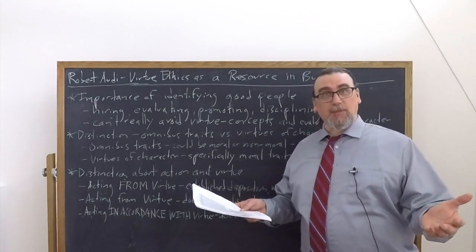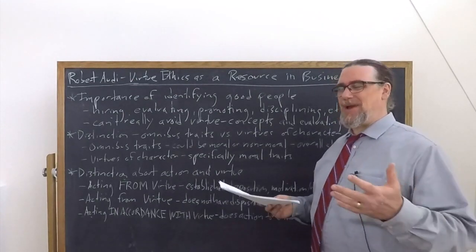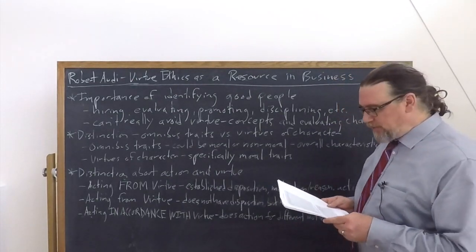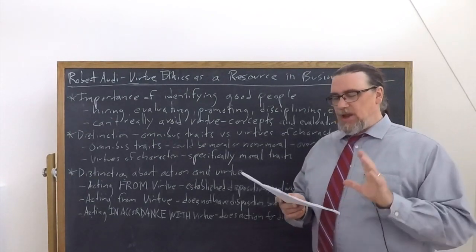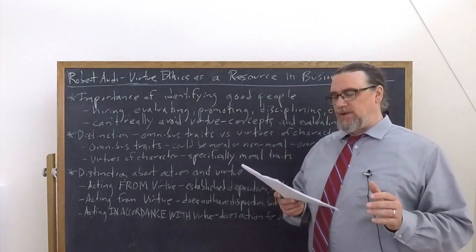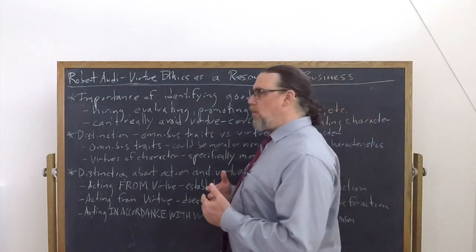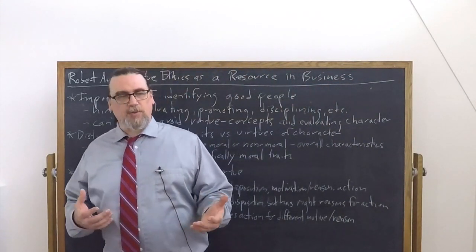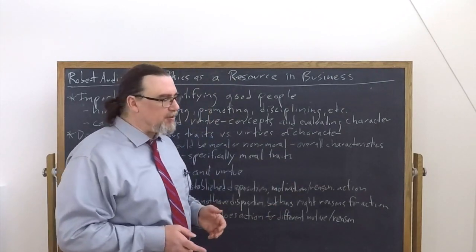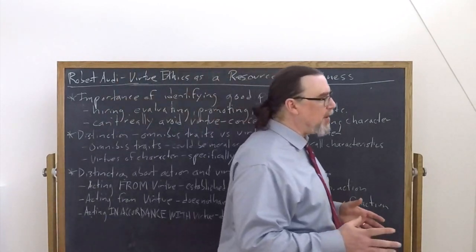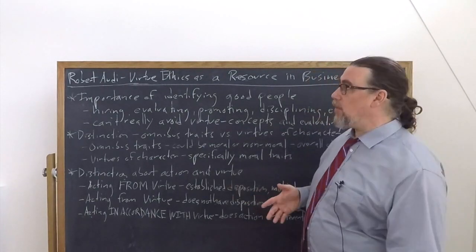And Audi points out that we really can't get away from concerns of character. We can certainly set them aside with usually bad consequences in the end when we hire the wrong people. So he tells us that any ethical theory in general should help us to identify morally good people. Whether we're utilitarians, deontologists, virtue ethicists, or employing an ethics of care, we do need to be able to specify who counts as a good person.